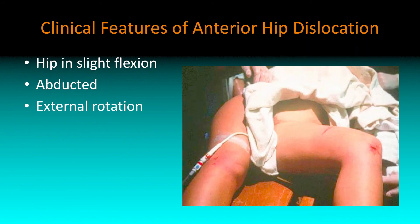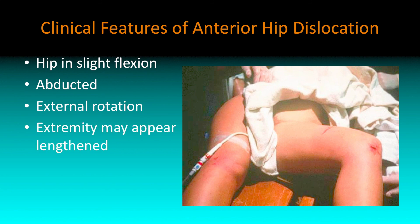Anterior hip dislocations will look a little bit different. The hip will still be in a little bit of flexion, but they're going to be abducted — so the leg is out — and they'll be externally rotated. The extremity may actually look a little bit longer.